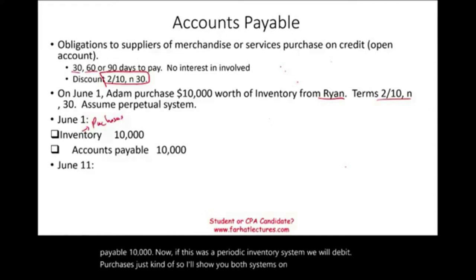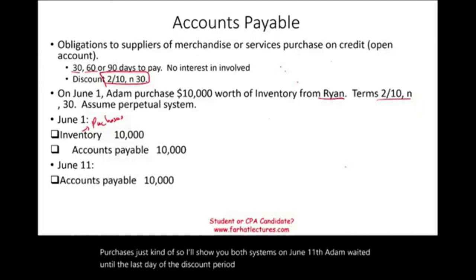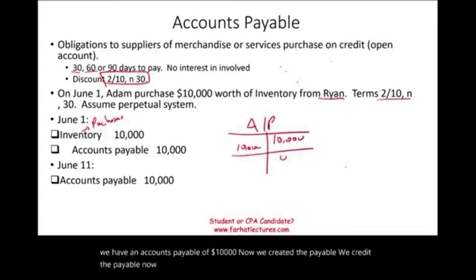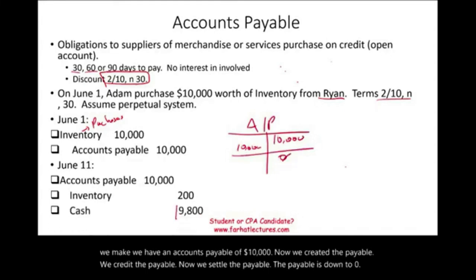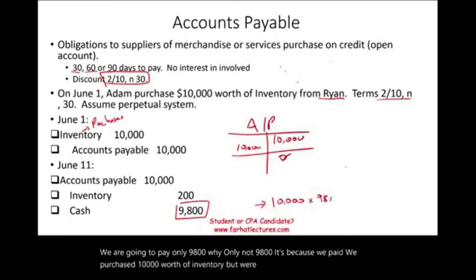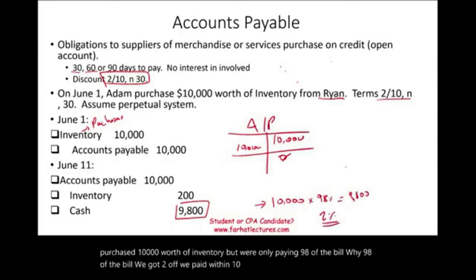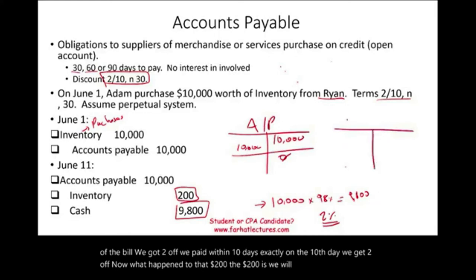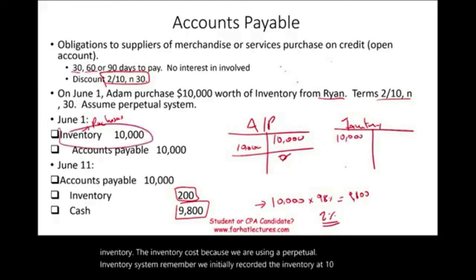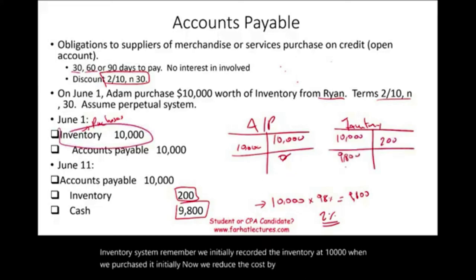On June 11th, Adam waited until the last day of the discount period and made the payment. The accounts payable of $10,000 is debited to zero. Adam will pay only $9,800 — because he purchased $10,000 worth of inventory but is paying only 98% of the bill. He got 2% off for paying within 10 days. The $200 discount reduces inventory cost under the perpetual system, so inventory is now recorded at $9,800.